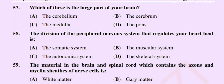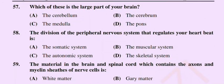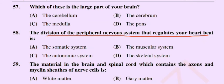Question number 58: The division of the peripheral nervous system that regulates your heartbeat — option A: the somatic system, option B: the muscular system, option C: the autonomic system, option D: the skeletal system. The correct option is option C: the autonomic system.